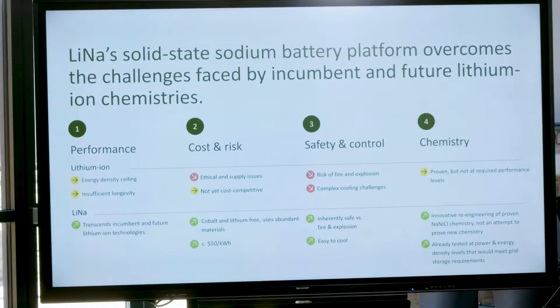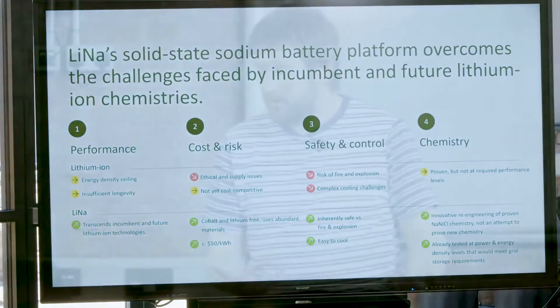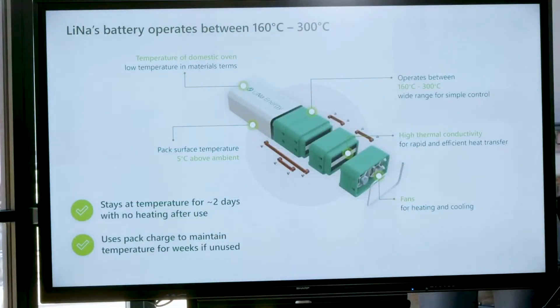Comparing LiNa's technology with lithium-ion, it is at least as good if not better in terms of performance, cost, and risk — particularly safety, where lithium-ion has significant issues and LiNa has major advantages. The chemistry also has a longer track record than lithium-ion, going back to the 1970s. One notable aspect: LiNa operates at higher temperatures — 160°C to 300°C. This can appear a disadvantage but is actually a distinct advantage, since lithium-ion has serious problems with thermal management, creating both cooling and heating challenges at low temperatures.